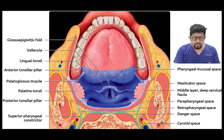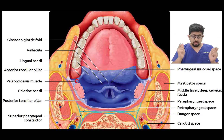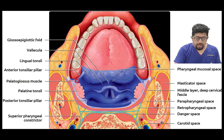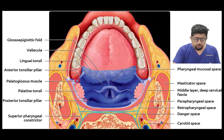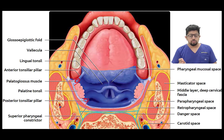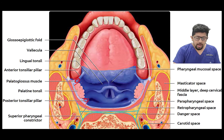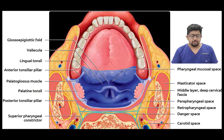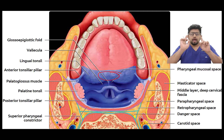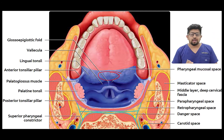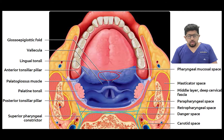The palatoglossus muscle connects the palate to the tongue and forms the anterior tonsillar pillar. The palatopharyngeal muscle forms the posterior tonsillar pillar, and between them lies the palatine tonsil. On the tongue surface is the lingual tonsil, and on the roof of the nasopharynx is the adenoid tonsil — these are the lymphatic structures present in this region.